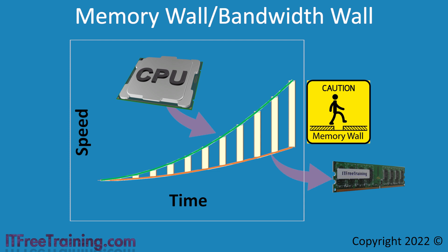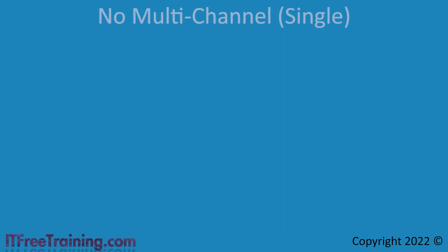This was more of a problem in the old days of computing as CPU speed kept increasing much faster than memory speed. However, nowadays CPU speed does not increase anywhere near as fast, but performance can be improved by adding features like additional cores to the CPU. The slow increase of CPU speed has allowed memory speed to increase and catch up with CPU speed.